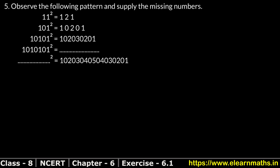Let's do question number 5 of exercise 6.1, that is squares and square roots. Question number 5 says: observe the following pattern and supply the missing numbers. We have to observe this and find all missing values.